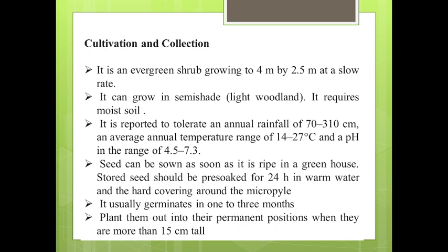Tea is reported to tolerate an annual rainfall of 70 to 310 cm and an average annual temperature range of 14 to 27 degrees Celsius. This temperature range is best suitable for its proper growth and development.